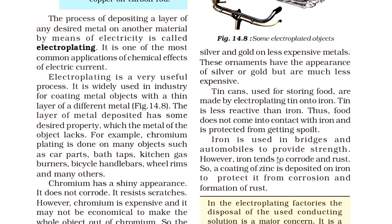Iron is used in bridges and automobiles to provide strength. However, iron tends to corrode and rust — जैसे ही उस पर हवा और पानी लगता है, जंग लग जाती है। इसीलिए iron को rust से बचाने के लिए उस पर zinc की coating की जाती है — ताकि iron खराब न हो और जंग न लगे।